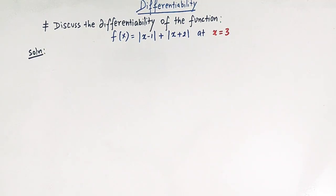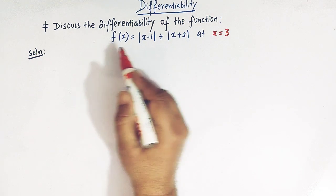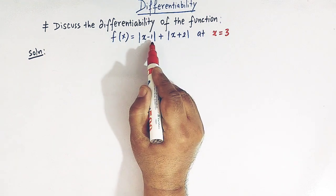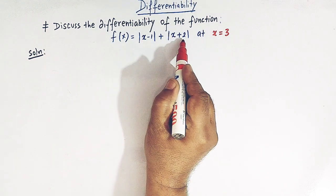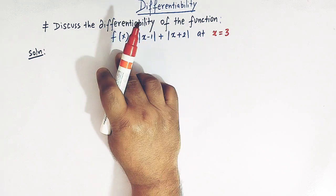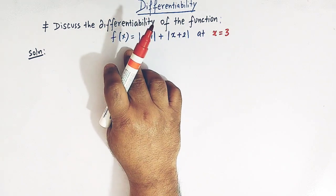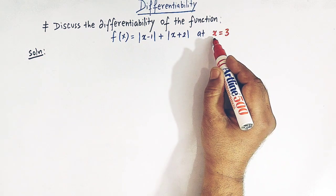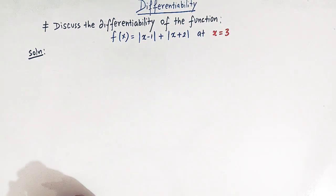Hello viewers. In today's class we are going to discuss yet another important and very conceptual problem from differentiability of functions. We have a function f(x) = |x - 1| + |x + 2| and we have to examine this function for its differentiability at the point x = 3.